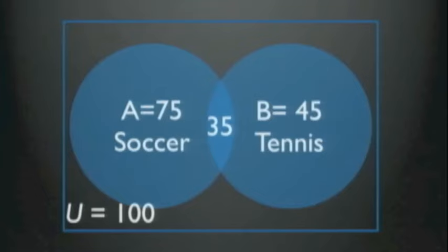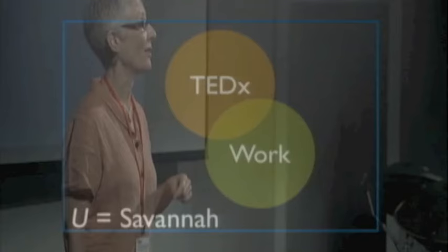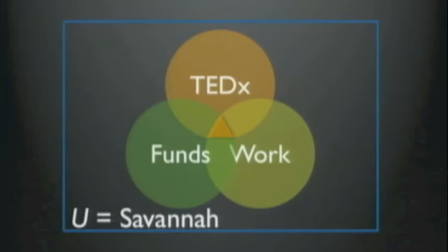I loved them. And I loved them so much that I started using them to think about other things, like how I connect with other people. So, for instance, if the universe is Savannah, which, let's just say it is, and A are the people who are interested in coming to TEDx, and B are the people who could get today off of work, and C are the people who could swing a ticket, then the intersection is us. The people here today.